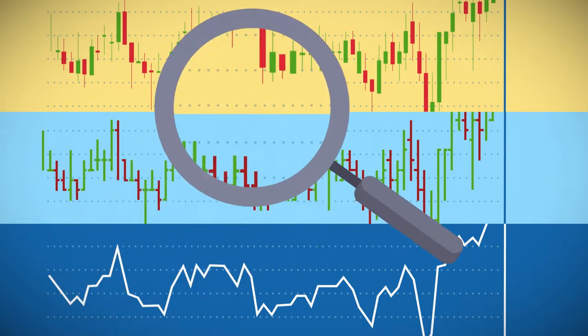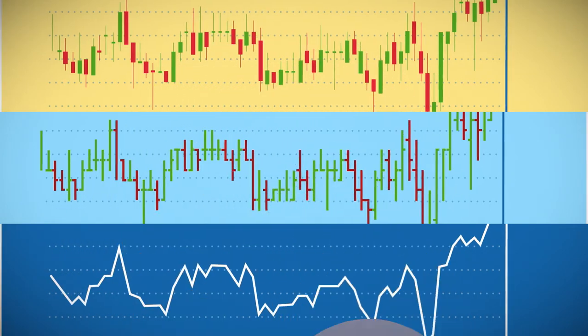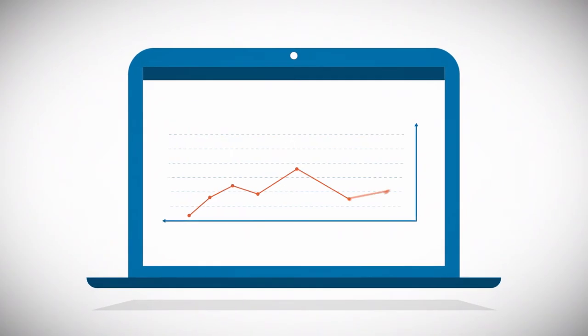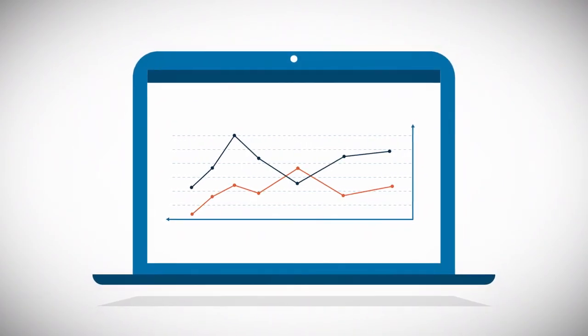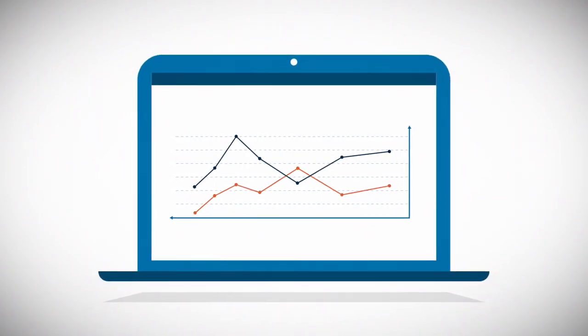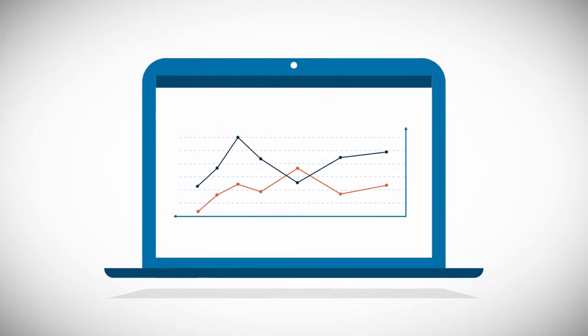Chart patterns can create self-fulfilling prophecies in markets because many people follow them. A chart pattern is more than arbitrary lines connecting points on a graph. Indeed, something significant happens when the lines form a trend.